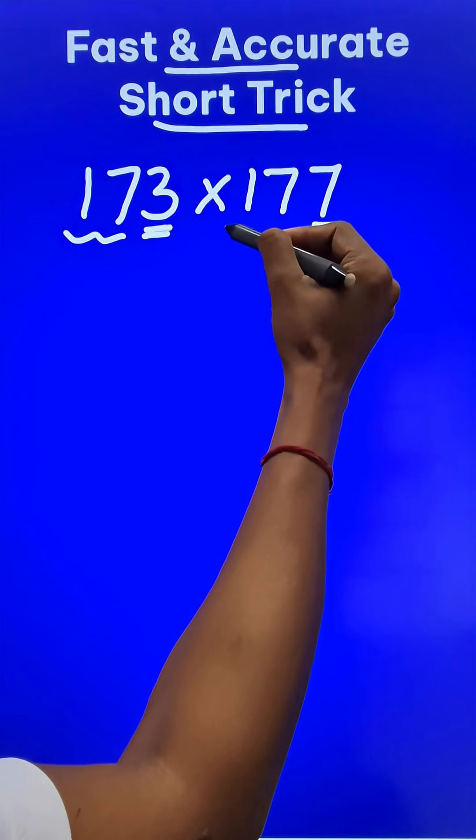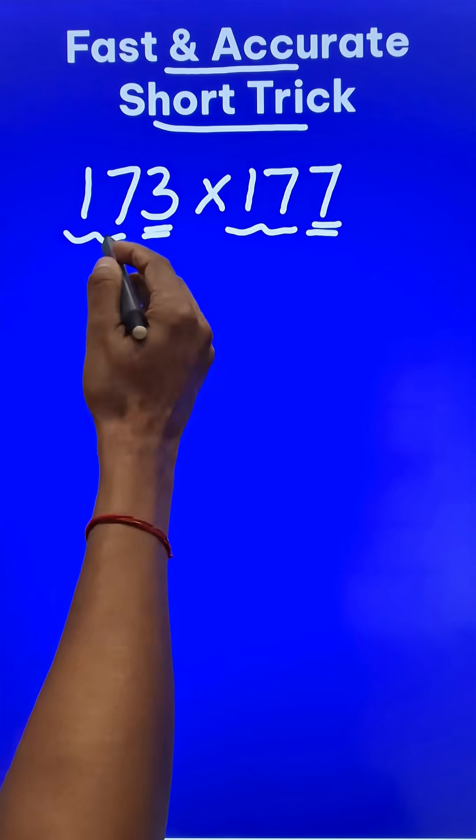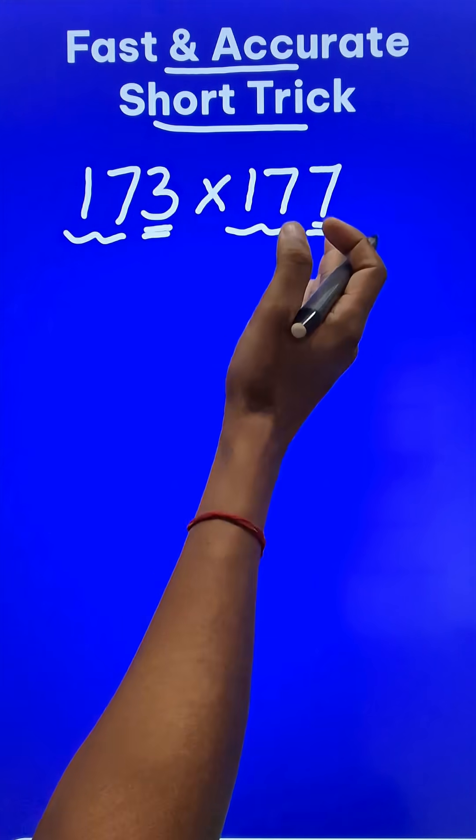And the remaining part of the number, 17 and 17, is the same. Under these conditions, these two numbers can be multiplied very quickly.